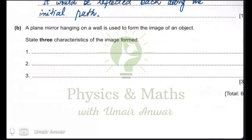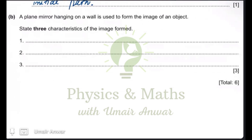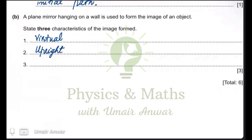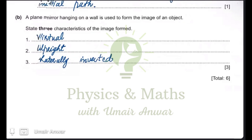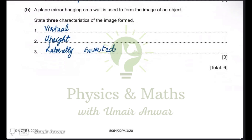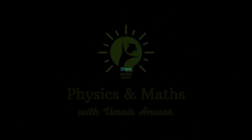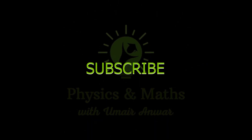The next part asks: a plane mirror hanging on a wall is used to form the image of an object — state three characteristics of the image formed. Whenever an image is formed using a plane mirror, we can write: first, it is always virtual; second, it is always upright; third, it is always laterally inverted. Additionally, it is at the same distance from the mirror as the object, and it is the same size as the object. Any three of these can be written as characteristics of the image formed by the mirror.